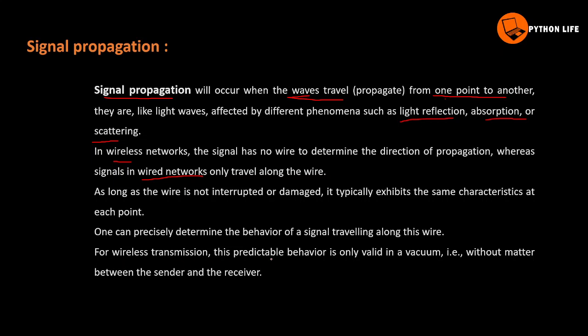For wireless transmission, this predictable behavior is only valid in a vacuum — that is, without matter between the sender and receiver. This predictable behavior depends on the conditions between sender and receiver.